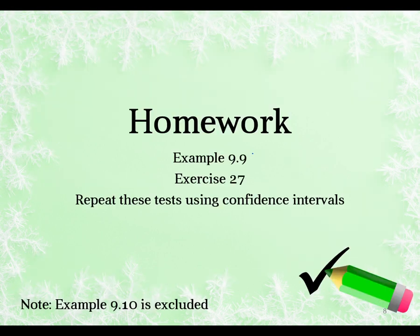So for your homework, I want you to go work through example 9.9 and exercise 27. And then I want you to repeat these tests yet again using confidence intervals. So think about what direction the test is when you do your confidence interval as well. And then take note that example 9.10 is excluded because this deals with beta and n, which we are not doing for this specific case.